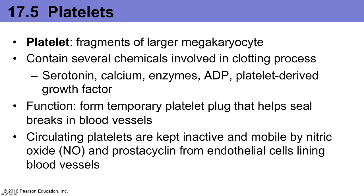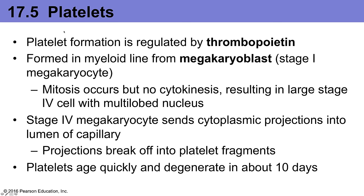Platelet formation is regulated by the hormone thrombopoietin. Starting from a hematopoietic stem cell → myeloid stem cell → megakaryoblast (stage 1 megakaryocyte), the megakaryoblast undergoes mitosis several times without cytokinesis, progressing through stages 2, 3, and finally stage 4 — a very large cell with a multilobed nucleus. The stage 4 megakaryocyte presses itself into special capillaries called sinusoids within the red bone marrow, inserting cytoplasmic projections into the capillary lumens. As these projections break off, platelet fragments flow into the bloodstream, and the plasma membrane quickly seals around each fragment, forming a disc-shaped platelet. Platelets age and degenerate in about 10 days.